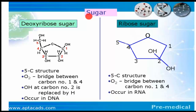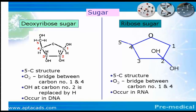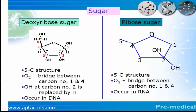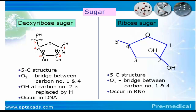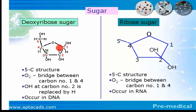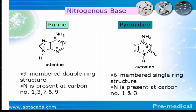There are two forms of sugar: deoxyribose sugar and ribose sugar. Deoxyribose sugar occurs in DNA and ribose sugar occurs in RNA. Deoxyribose sugar is a five-carbon structure with an oxygen bridge present between carbon number one and carbon number four. The most important feature is carbon number two — in deoxyribose sugar there is one hydrogen and one hydroxyl, whereas in ribose there are two hydroxyl groups. This is what differentiates deoxyribose from ribose sugar.